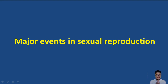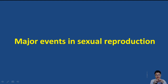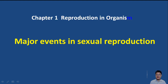Hello. Today we'll discuss major events in sexual reproduction. There are many events occurring during sexual reproduction. Sexual reproduction involves two parents who produce two different gametes which, after fertilization, lead to the formation of a zygote. The zygote undergoes division to form many cells and finally the entire living organism. This is one subtopic in chapter one: reproduction in organisms.